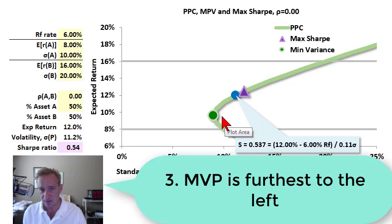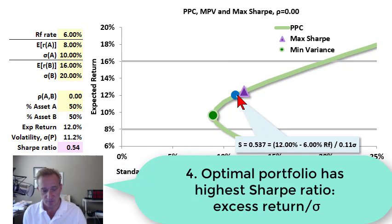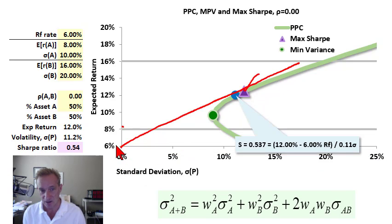The third point is the minimum variance portfolio - that's the point on the curve furthest to the left with the minimum standard deviation. And the fourth point is that the optimal portfolio, in theory, is the one with the maximum Sharpe ratio, which also maximizes the slope of the tangent line if we anchor on the risk-free rate. Thank you very much.